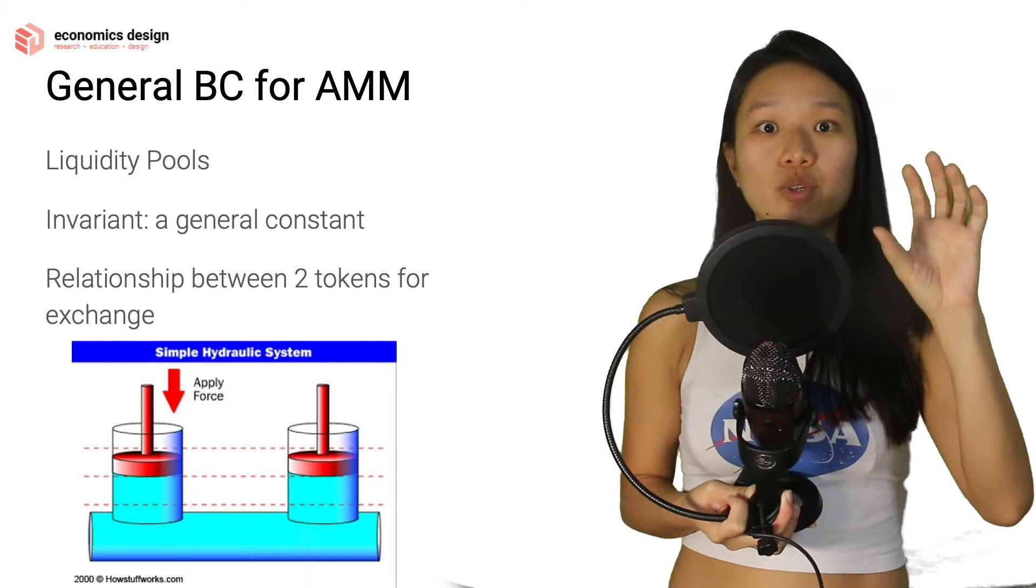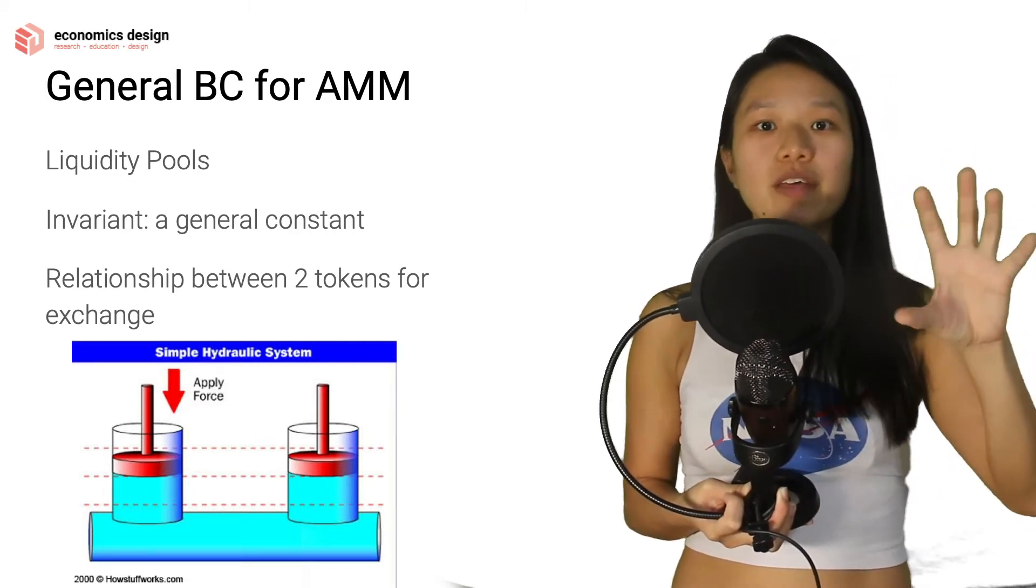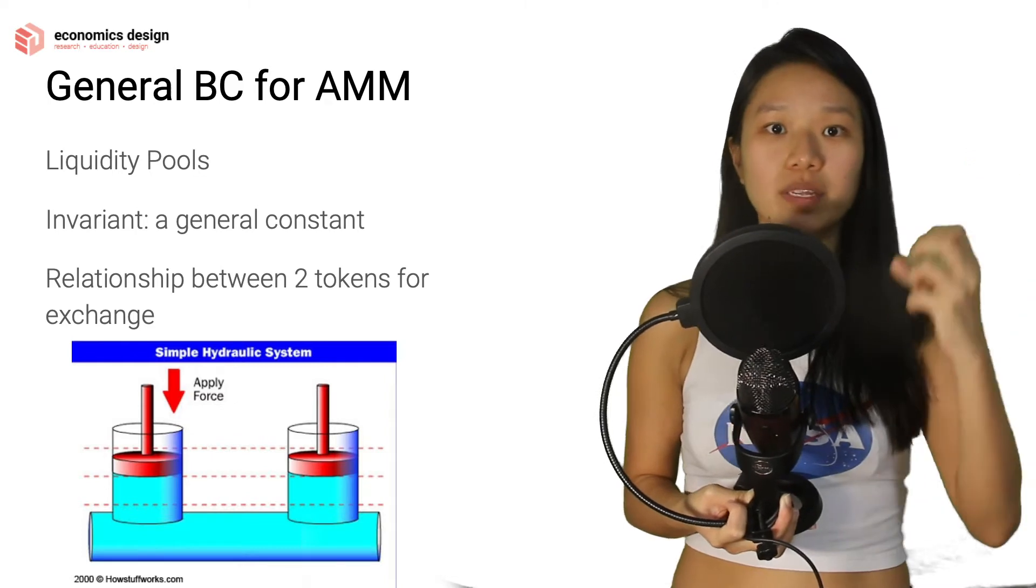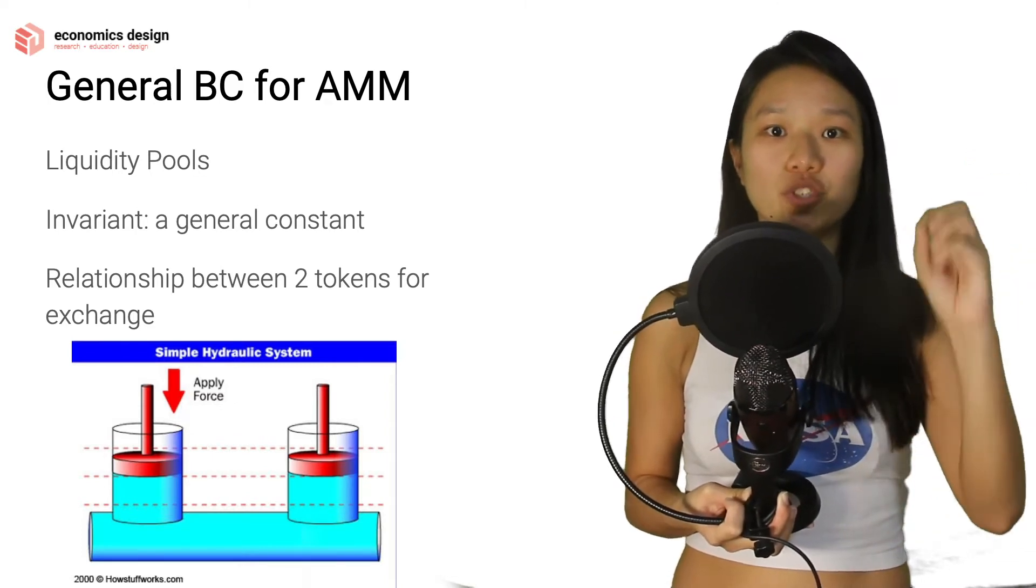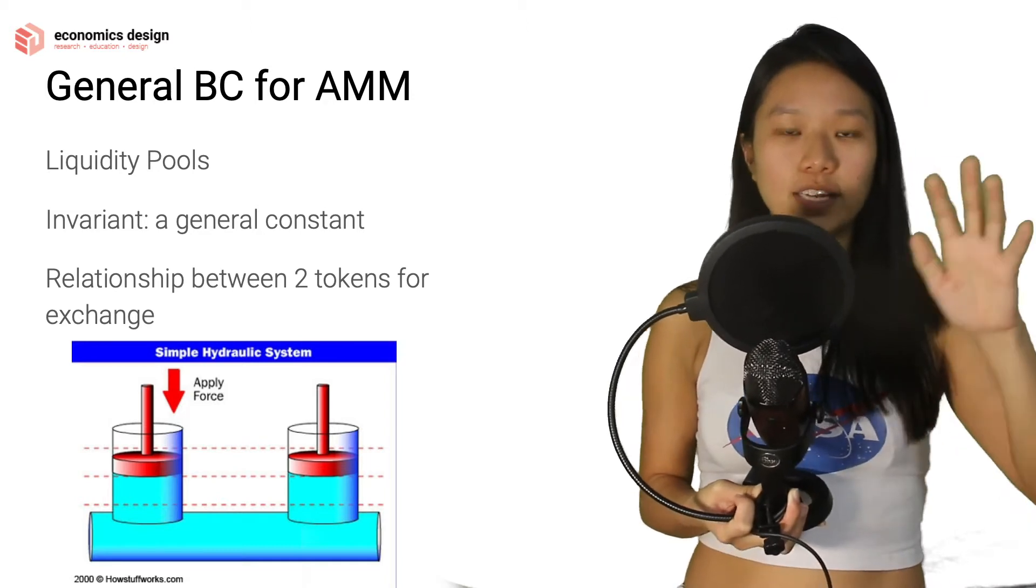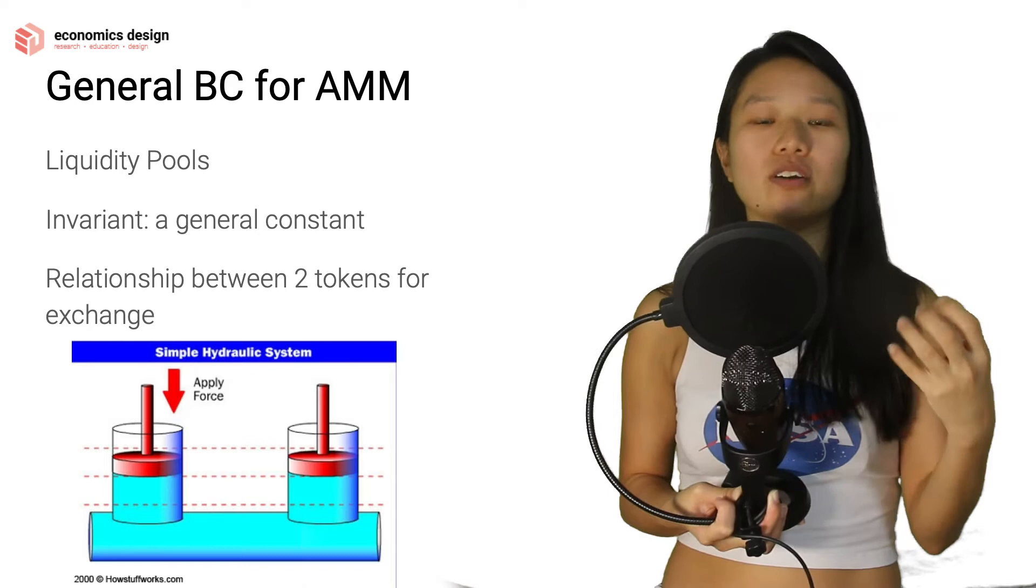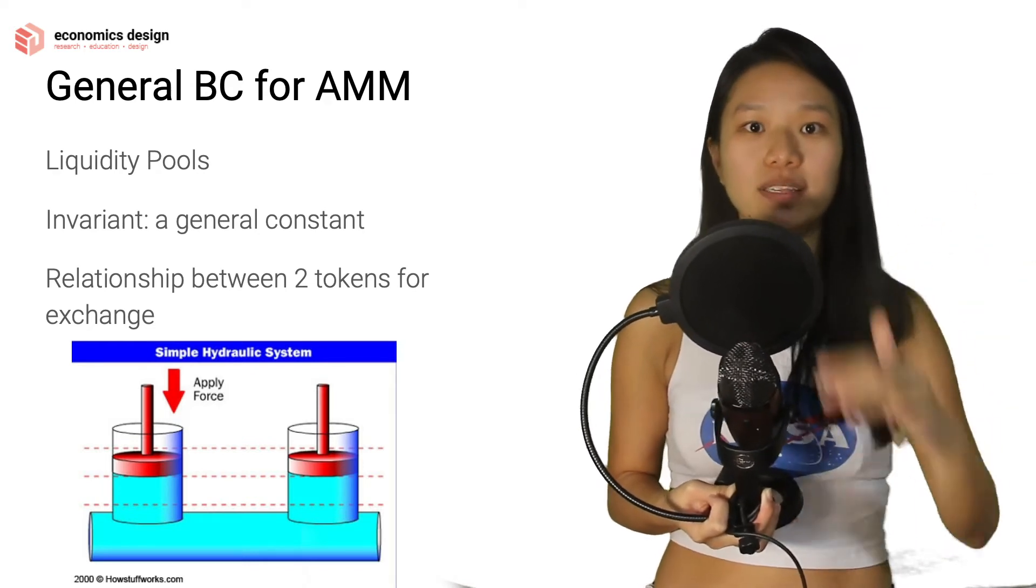It's the relationship between two different tokens: token A and token B. This math model will shape the different relationships between token A and token B. Of course you can have multiple tokens A, B, C, D, E and you have a math function to correlate or to share the relationship between these different tokens.